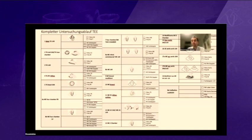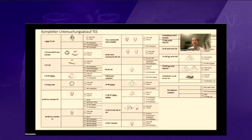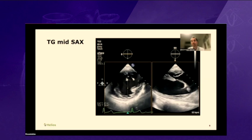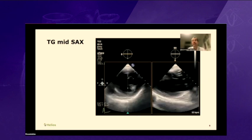How do we perform the echo for mitral valve repair with minimally invasive approach? We do it just like all other procedures. Here in Leipzig, we have a protocol with a sequence of views that needs to be acquired as a comprehensive examination. For each view, it's specified what measurements have to be done and what modality needs to be used — 2D, color, 3D, and Doppler. We follow the same protocol and start from the transgastric short axis.